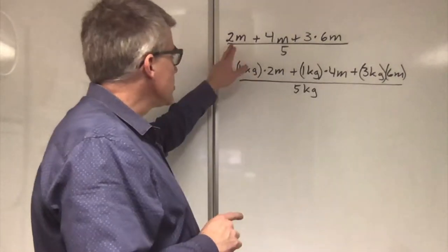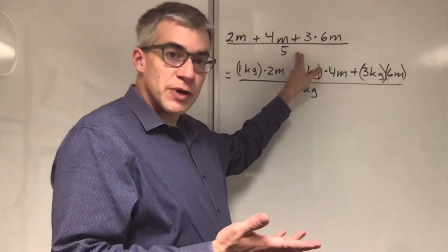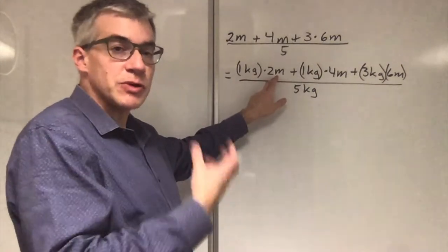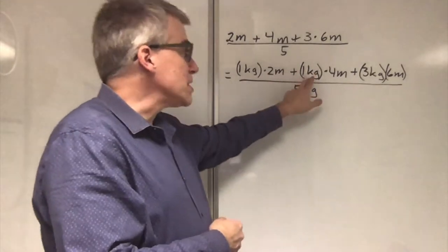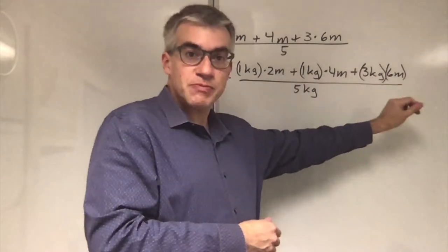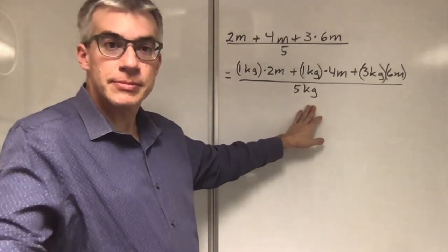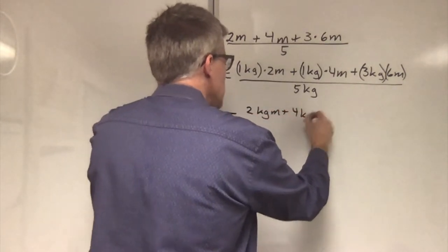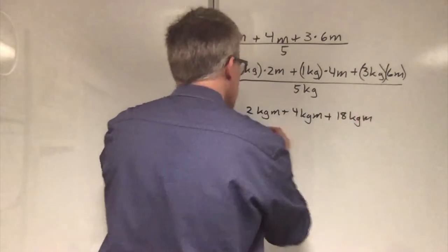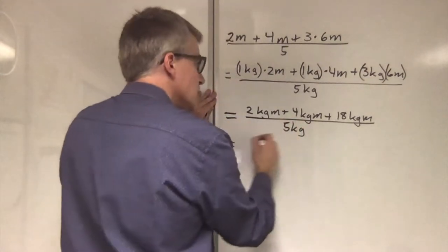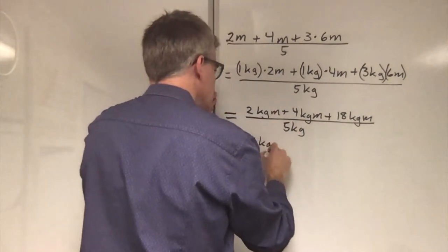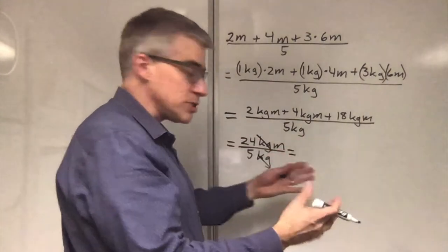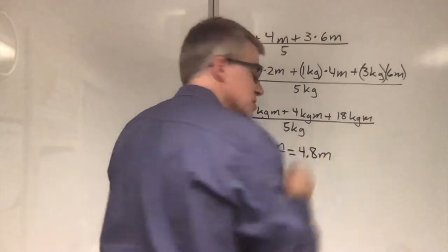Adding a bit more detail. Two meters plus four meters plus three times six meters over five. Really what we're doing is one kilogram times two meters plus one kilogram times four meters plus three kilograms times six meters divided by five kilograms. So we get two kilogram-meters plus four kilogram-meters plus eighteen kilogram-meters over five kilograms, which is 24 kilogram-meters divided by five kilograms. Kilograms cancel out, we get 4.8 meters as before.